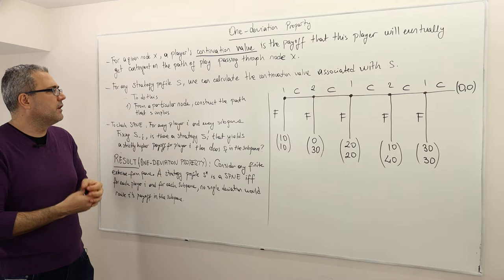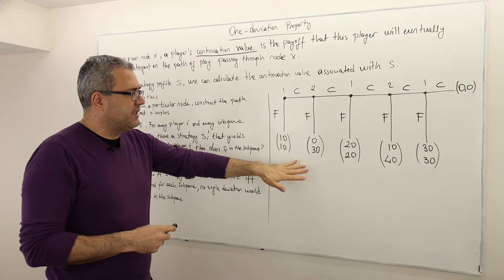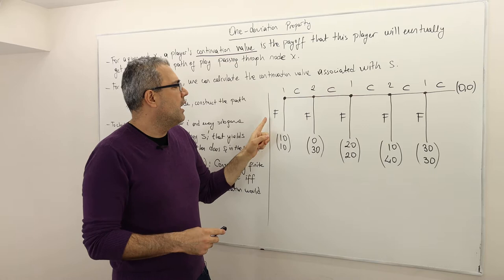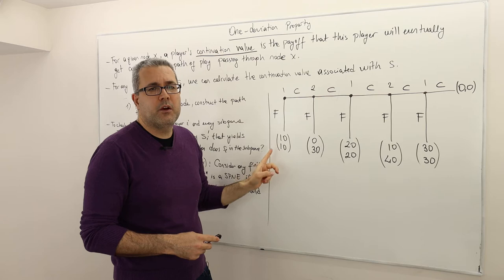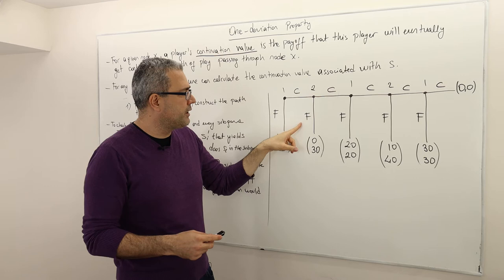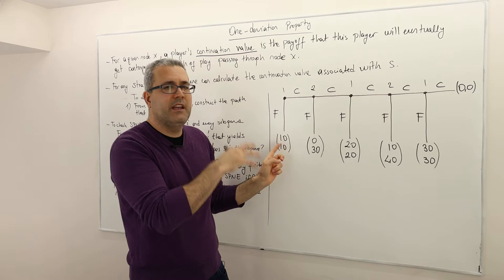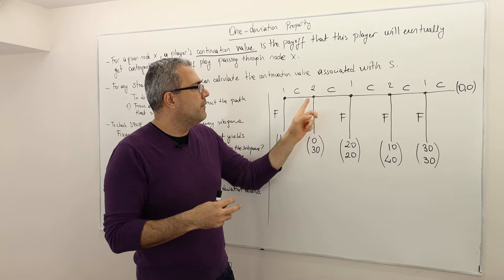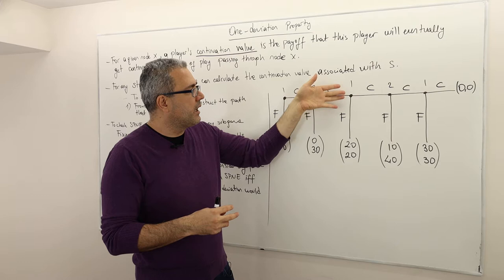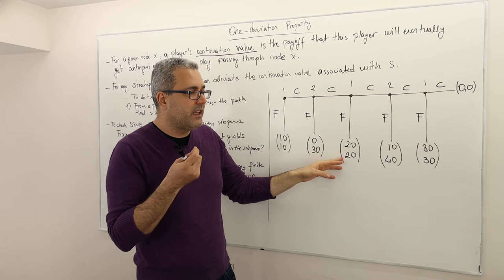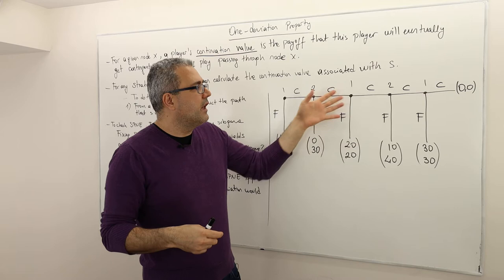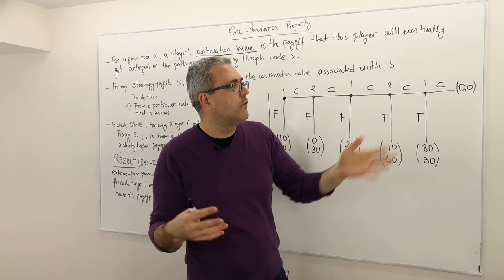Let's give an example. Here I have a game between two players. Player one moves first — he can finish the game or continue. If he finishes, both players get a payoff of 10-10. If he continues, player two has the option of finishing or continuing. If player two finishes, we take 10 units from player one and double it to give to player two. If player two continues, player one moves again with the same structure repeating, until at the end player one can either continue — ending the game at 0-0 — or finish with 30-30.